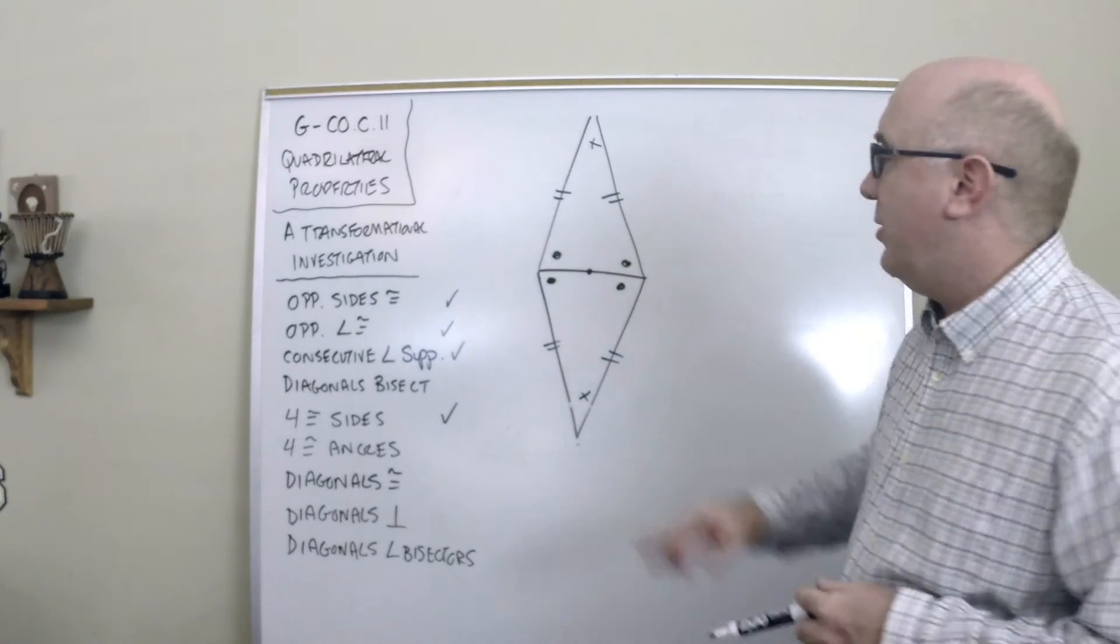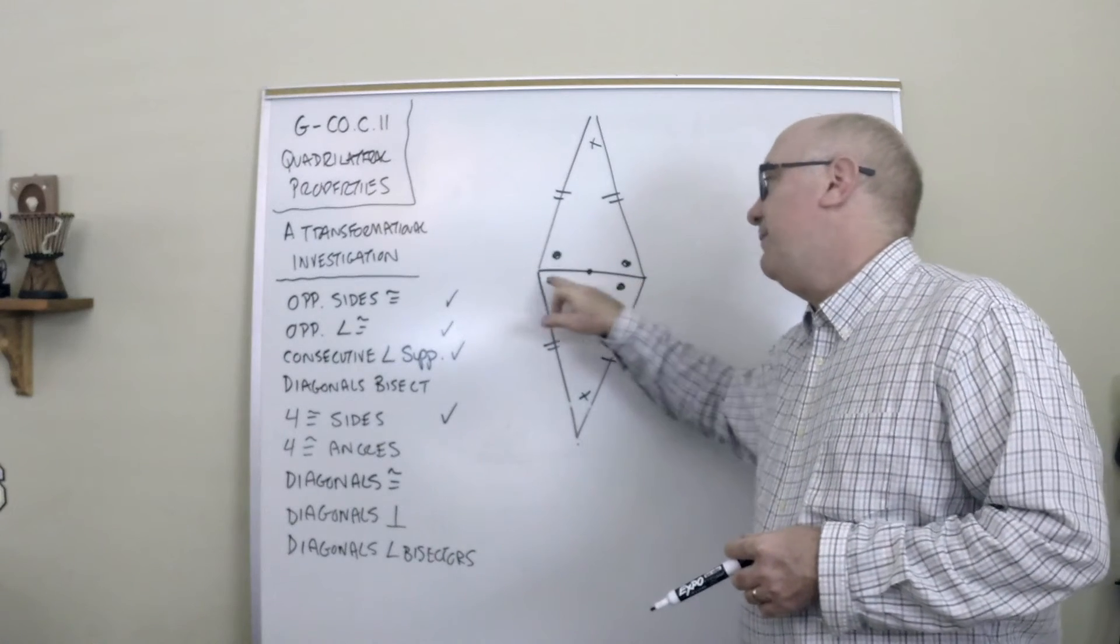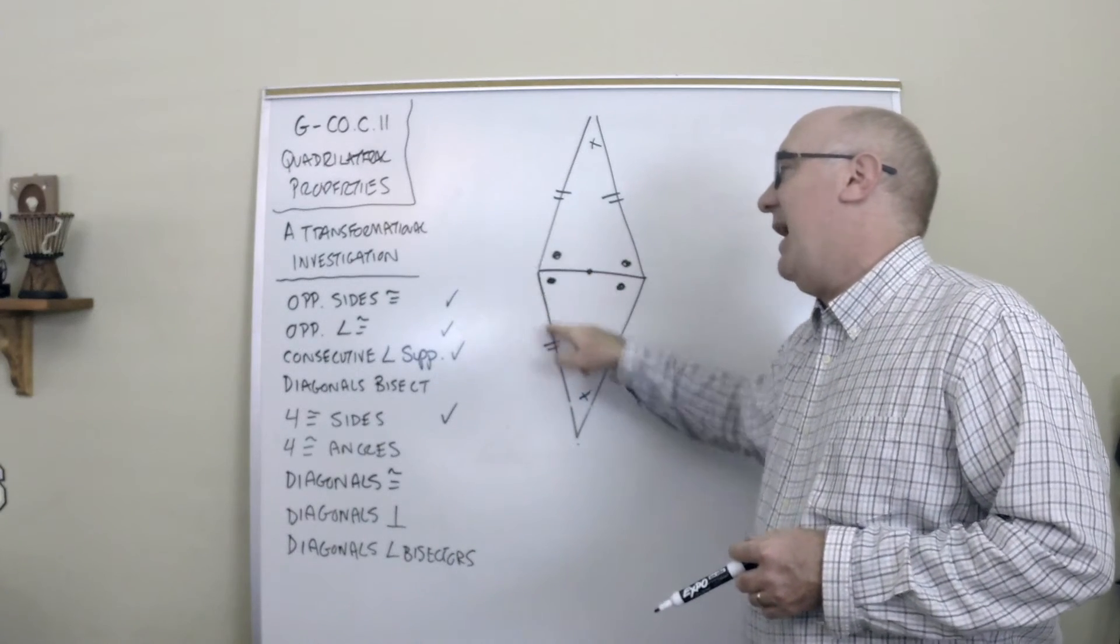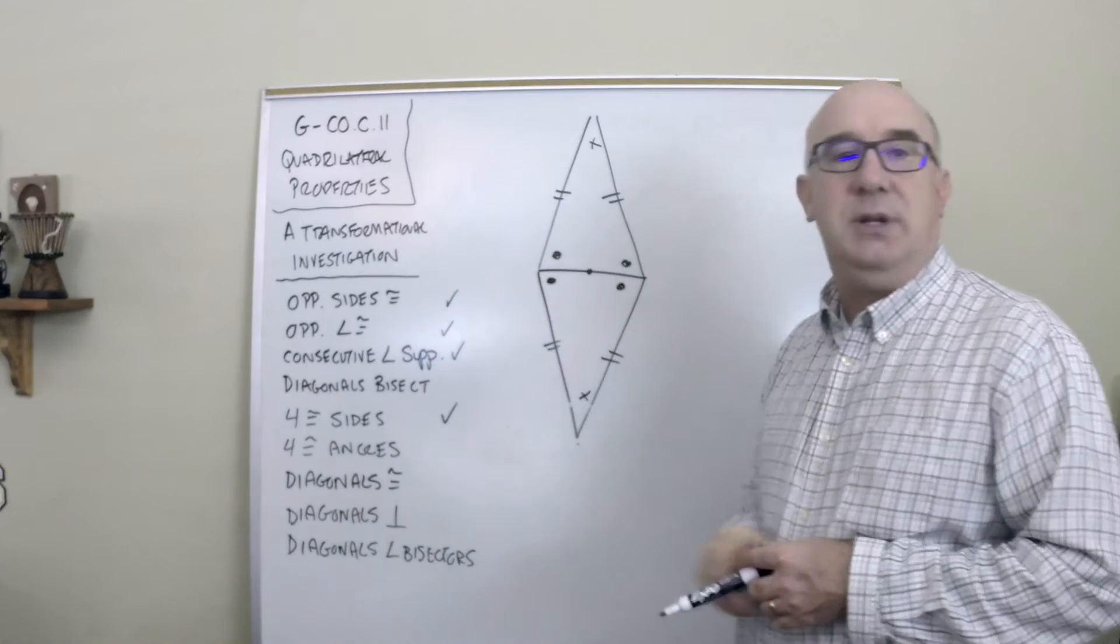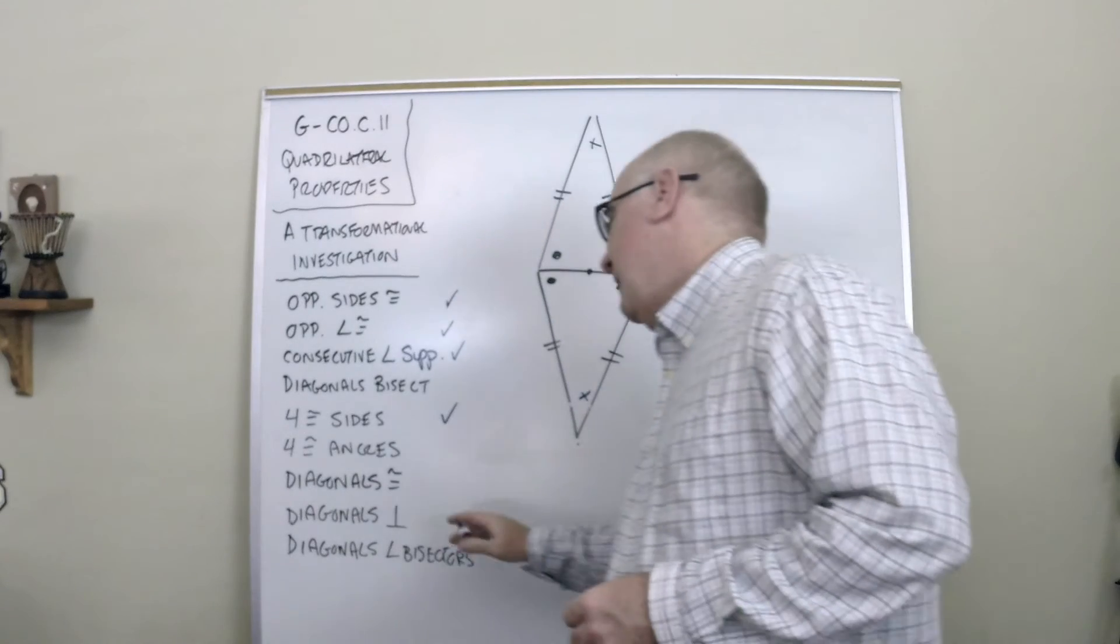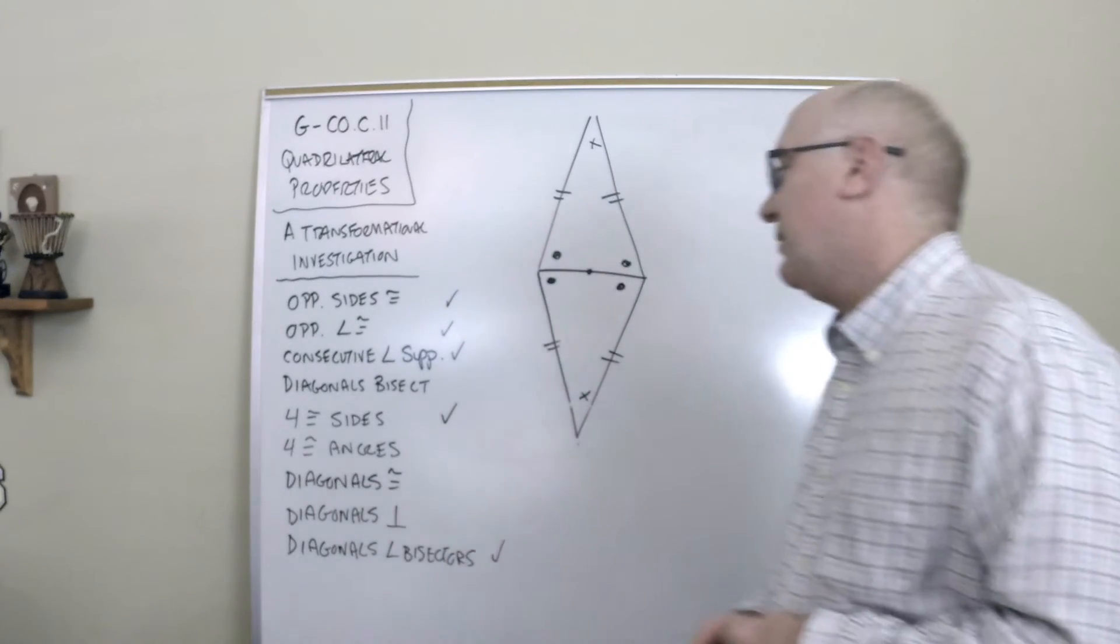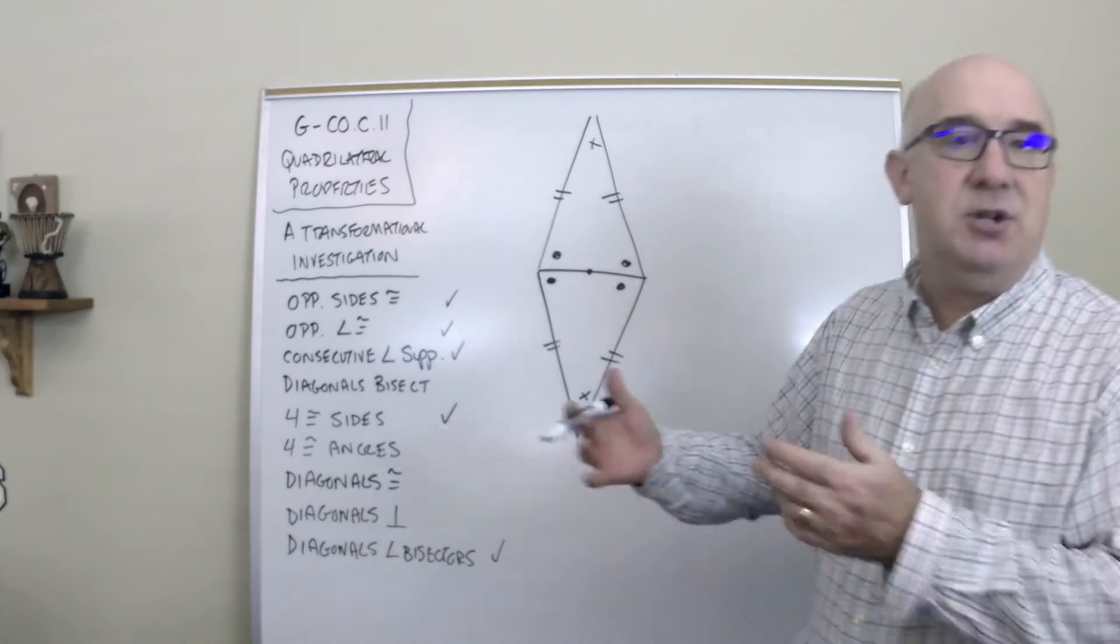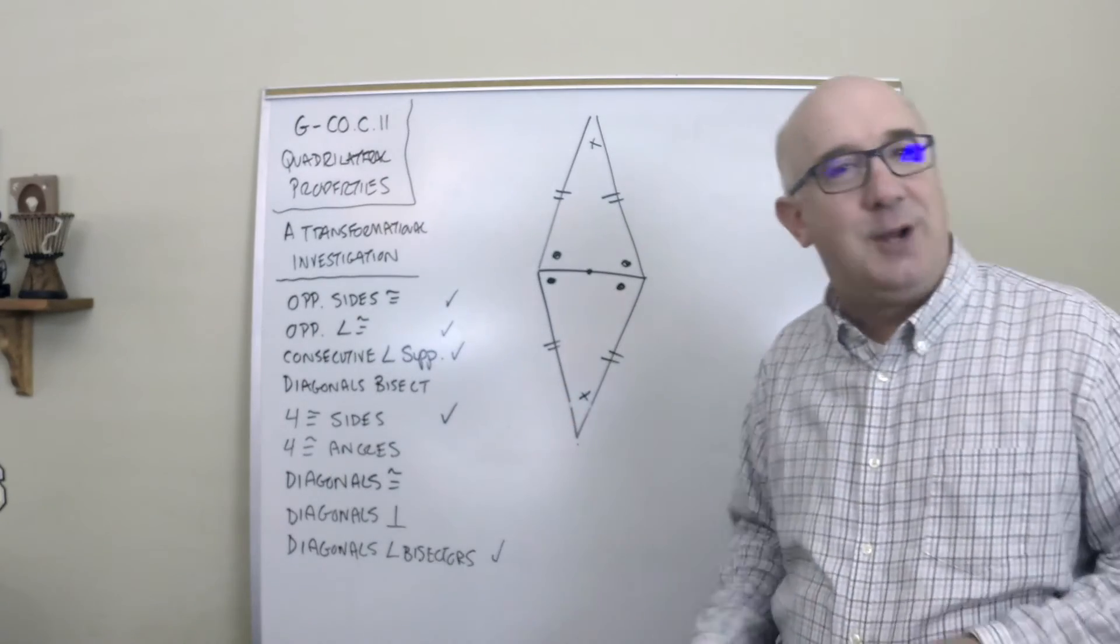I notice that with this diagonal, it cut the big angle of the rhombus into two equal parts. Diagonals are angle bisectors, and I could continue to do this until I find all of the properties of a rhombus hiding right there.